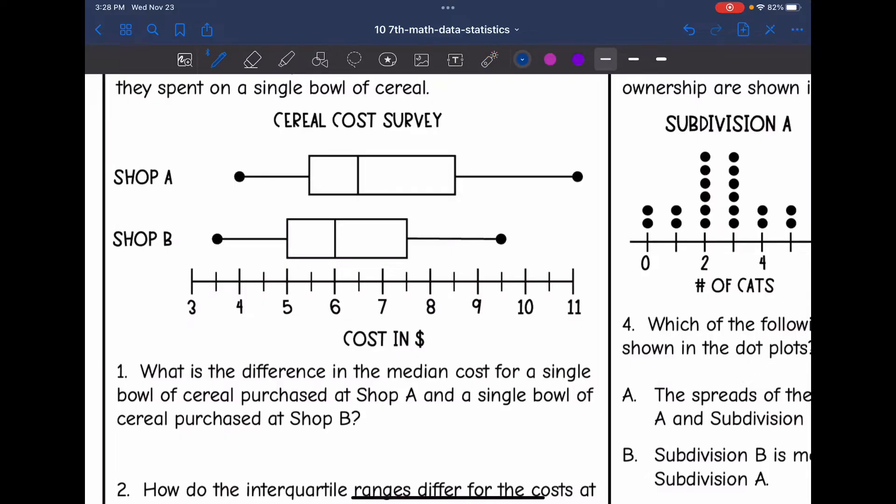Let's find their medians. Shop A, it looks like their median is $6.50. And then Shop B, it looks like their median is $6 exactly. So to find the difference, I would subtract $6.50 minus $6 and I get 50 cents. So their difference is 50 cents.